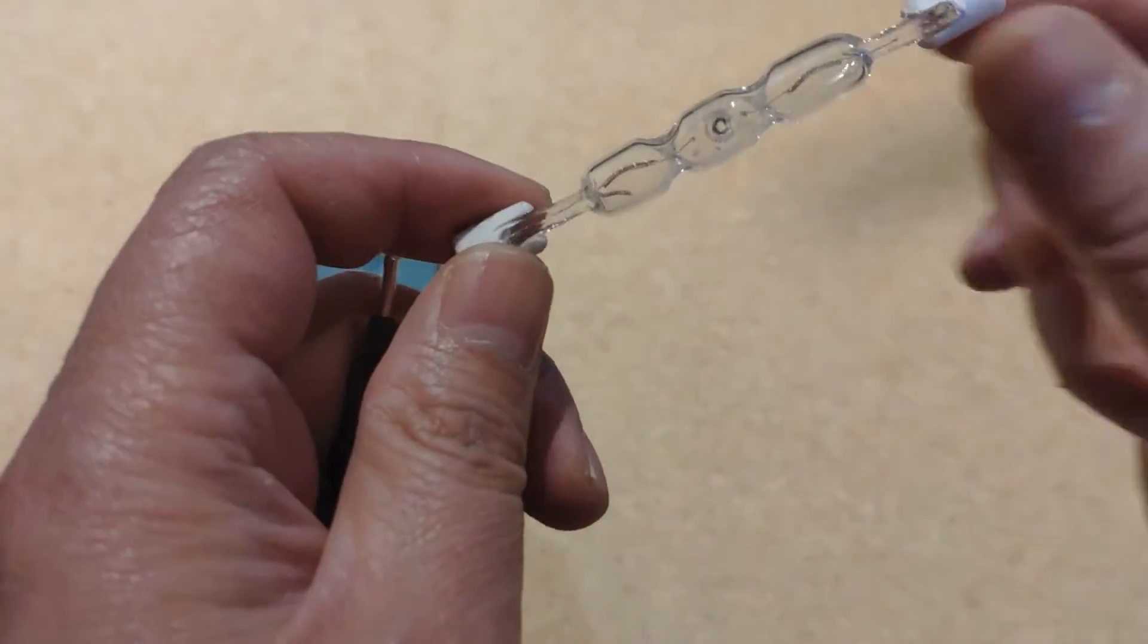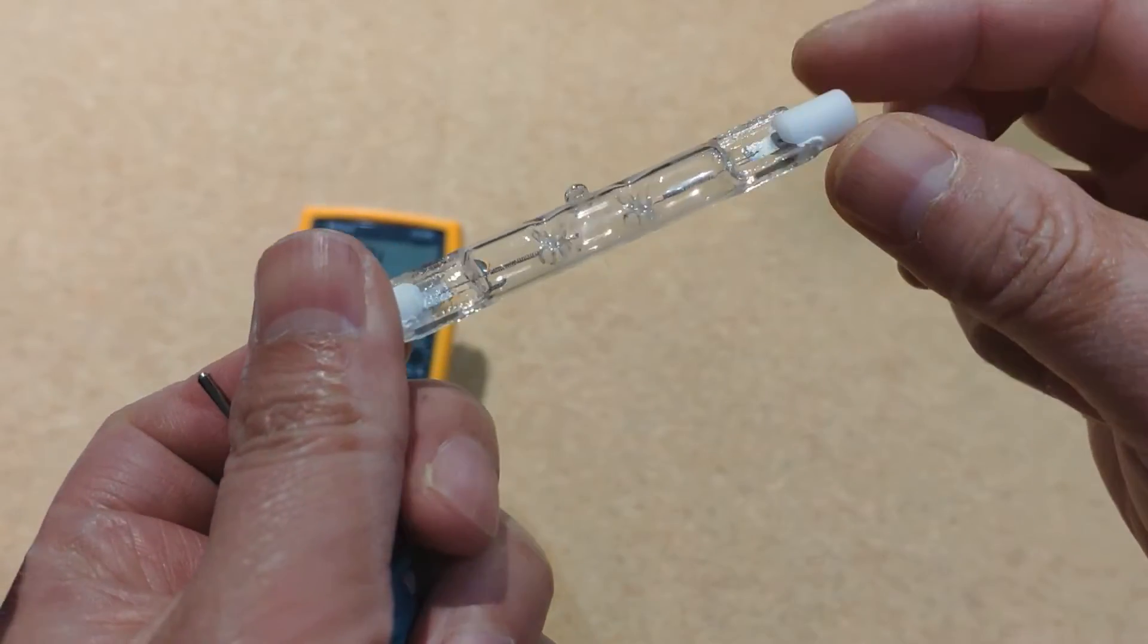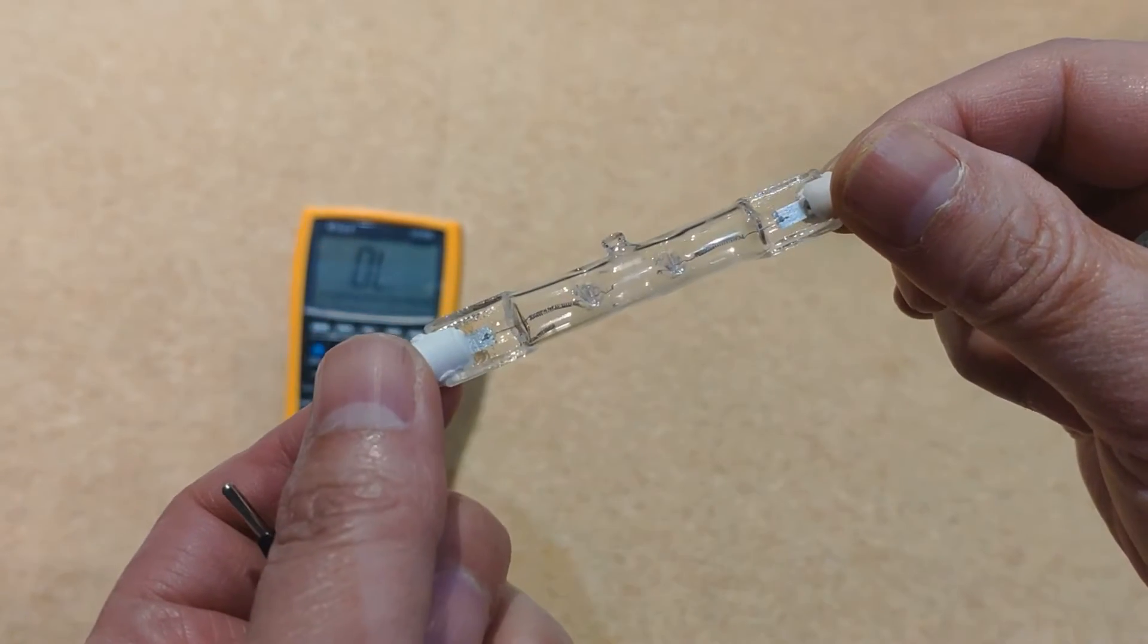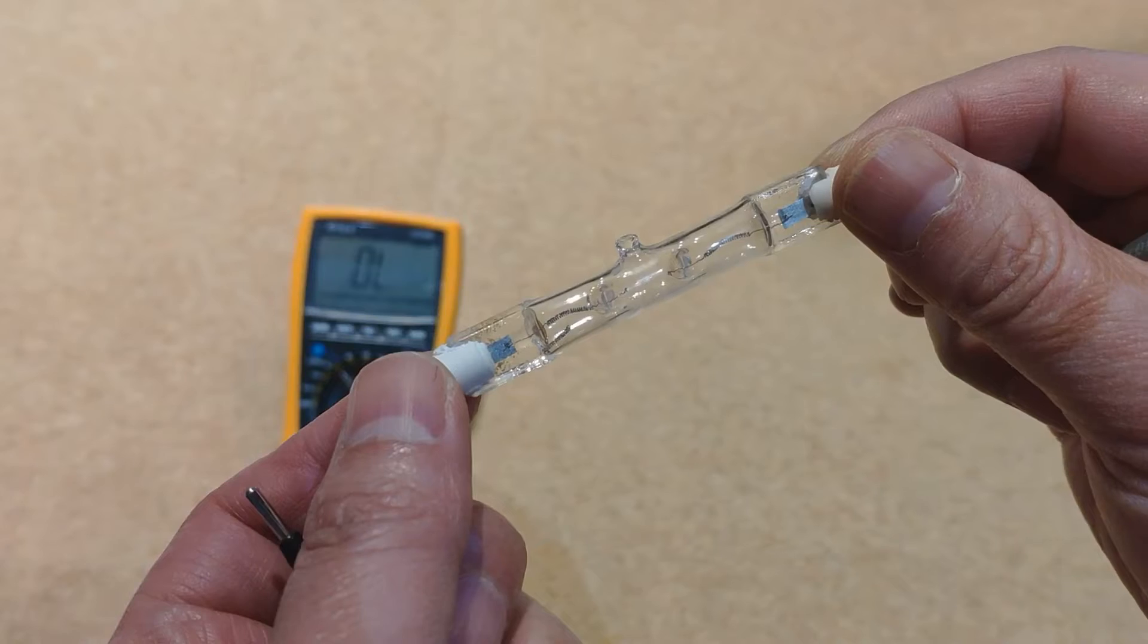When looking closely at the bulb, you can see the internal circuit. The filament is broken in the middle. The bulb is definitely broken.